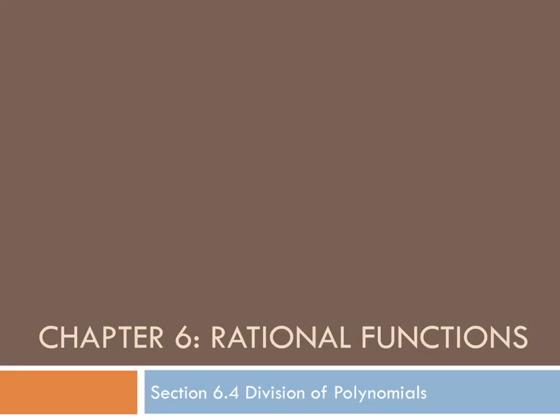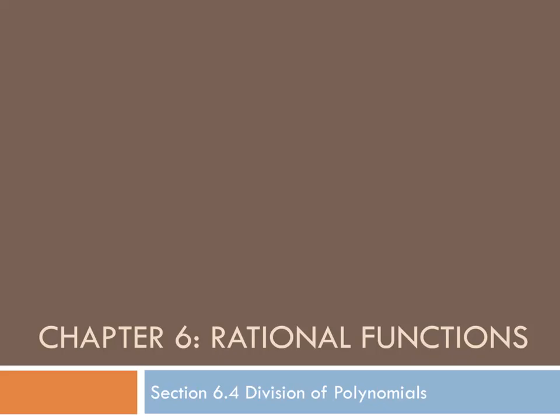Depending on how many terms there are in a polynomial, we name it based on that. A polynomial with a single term is called a monomial. With two terms, a binomial. With three terms, a trinomial. After that, we just call them polynomials. So a monomial is just a polynomial with a single term present.